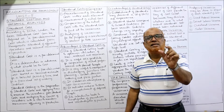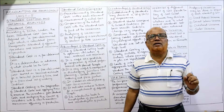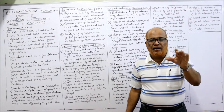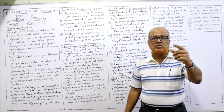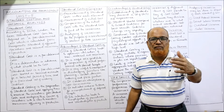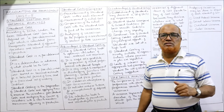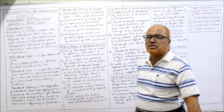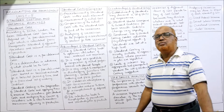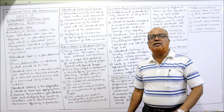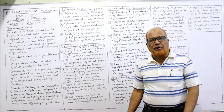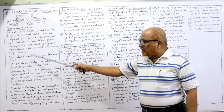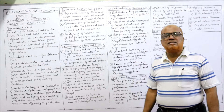Standard cost is simply finding out the predetermined cost, whereas standard costing involves calculating the standard cost, comparing the actual cost with the standard cost to find out the variation, and then analyzing the causes of the variations to maintain maximum efficiency in production. The ultimate objective of standard costing is to attain maximum efficiency in the production process.